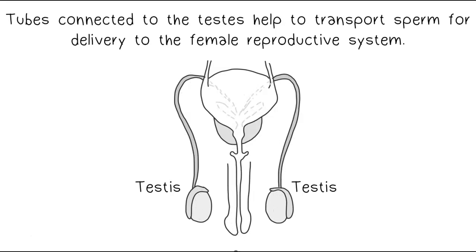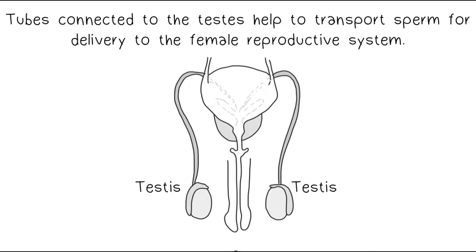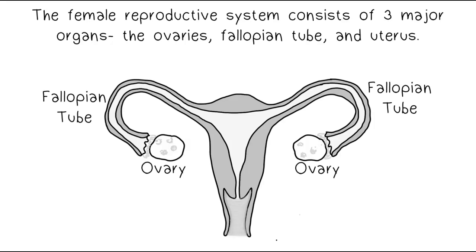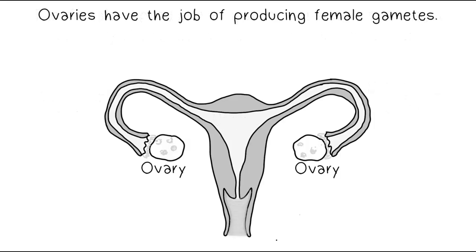The female reproductive system consists of three major organs: the ovaries, the fallopian tube, and the uterus. The ovaries have the job of producing female gametes.